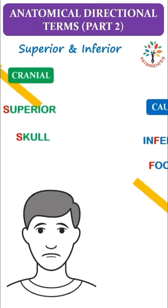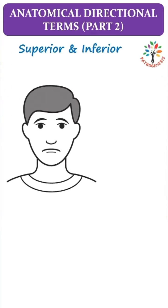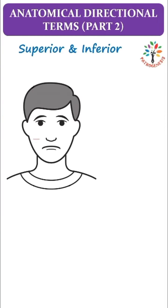Let's look at some examples. Eyes are superior to the nose because eyes are above the nose. Nose is superior to the mouth because nose is above the mouth. We can also say the mouth is inferior to the nose, and the nose is inferior to the eyes, because the mouth is below the nose and the nose is below the eyes.